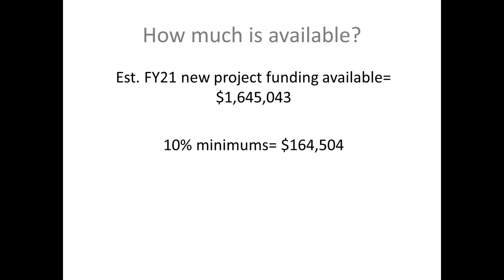For FY21, we estimate we'll have just over $1.6 million available. If distributed over the 10% minimum, that means each category will receive about $164,000. But most likely, we will see that these minimums may change for each category, because over the years the community preservation committee has increased the allocations in all three categories.